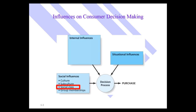Remember our model — there are internal influences, there are situational influences, and there are social influences, and social class is just one of the social influences on decision-making.